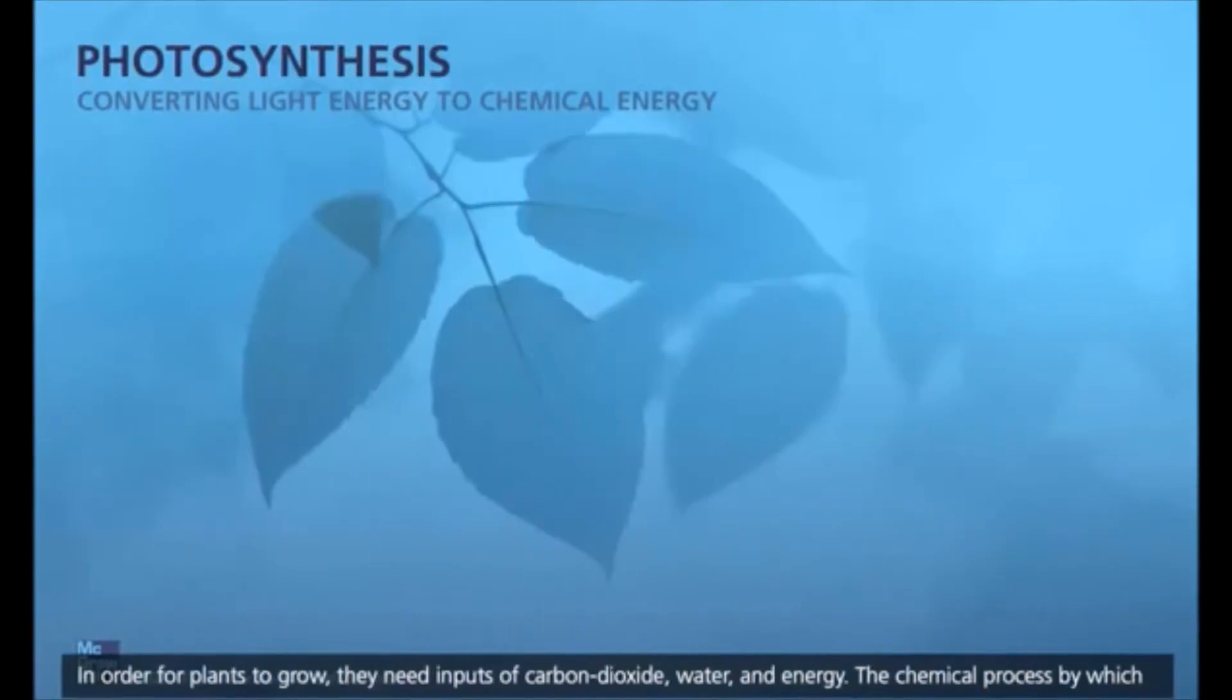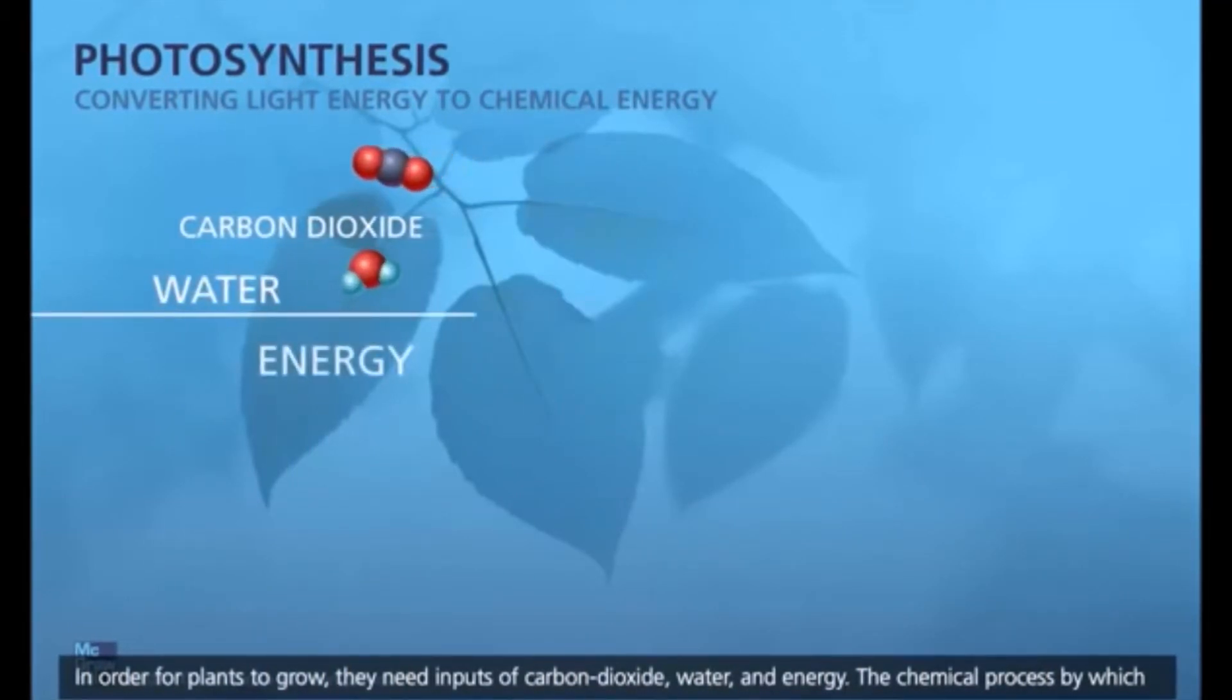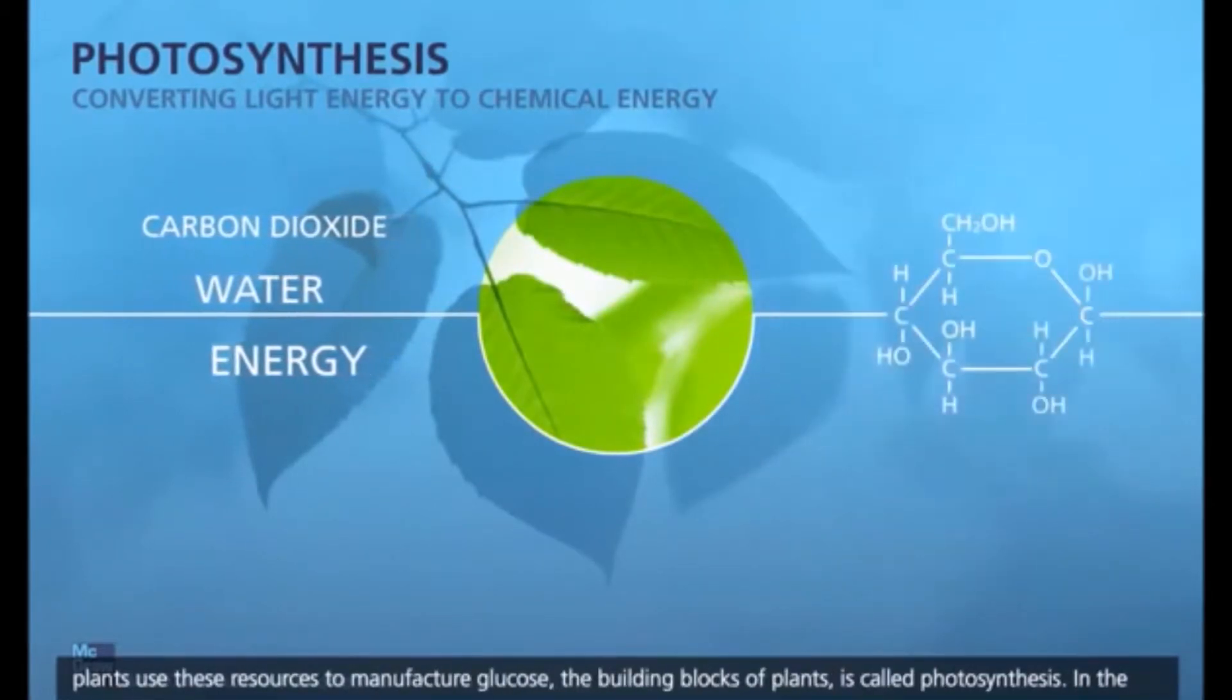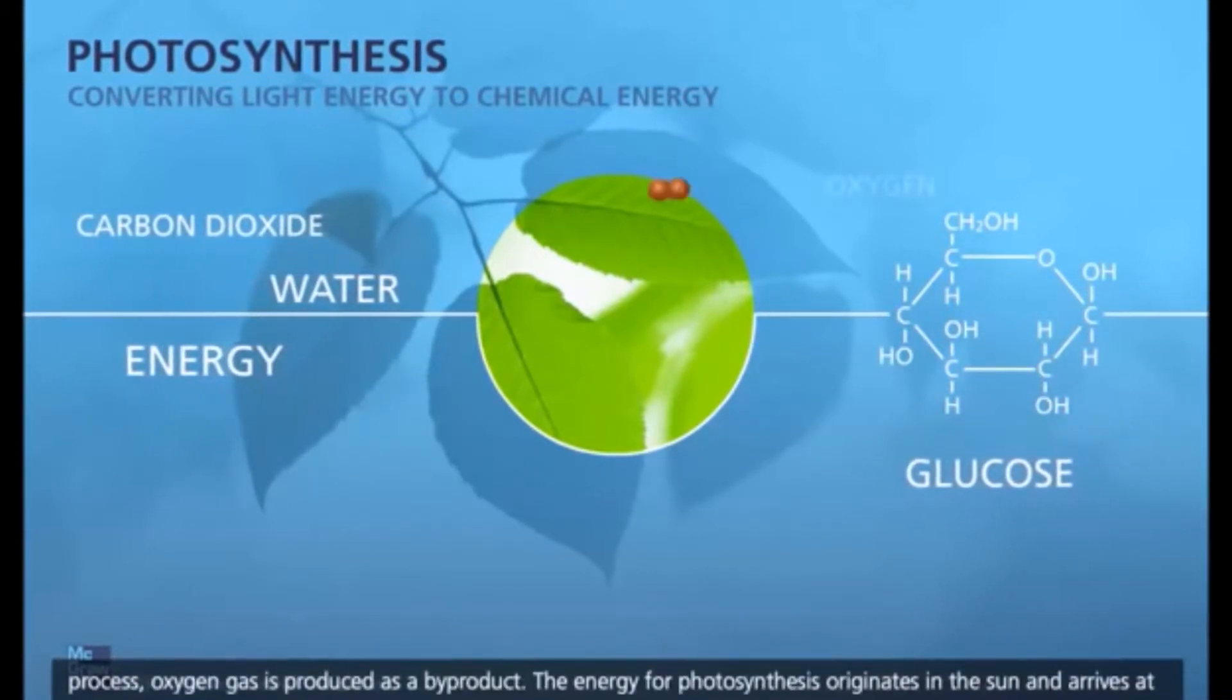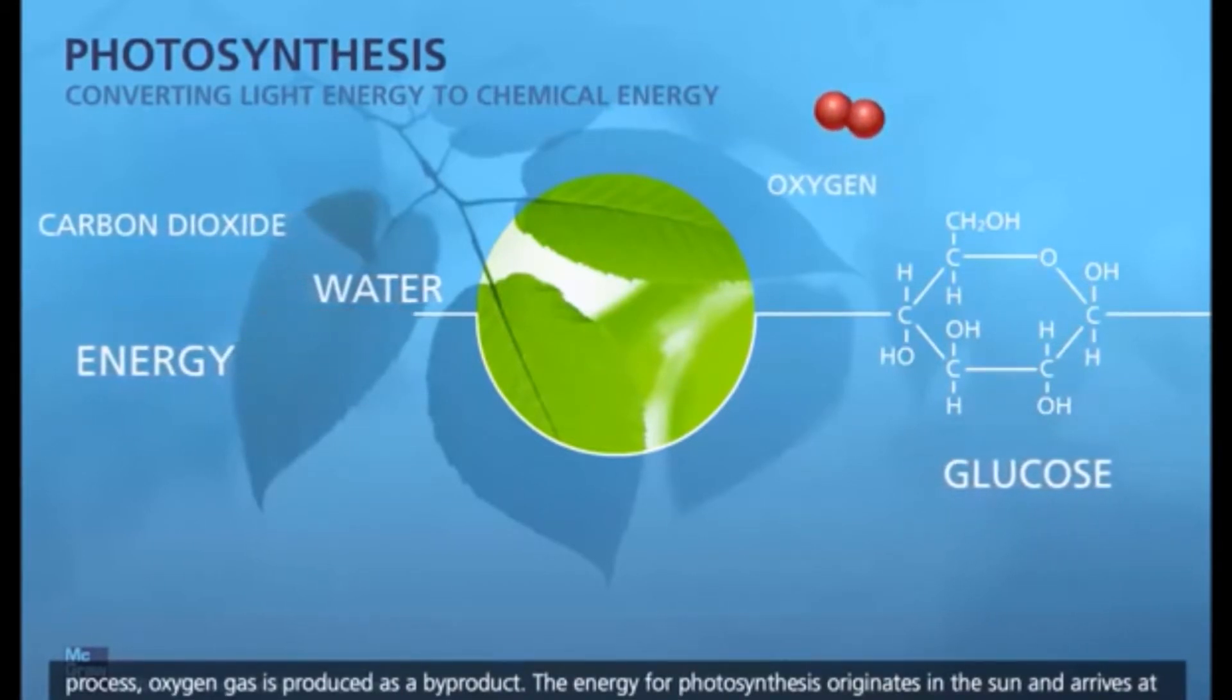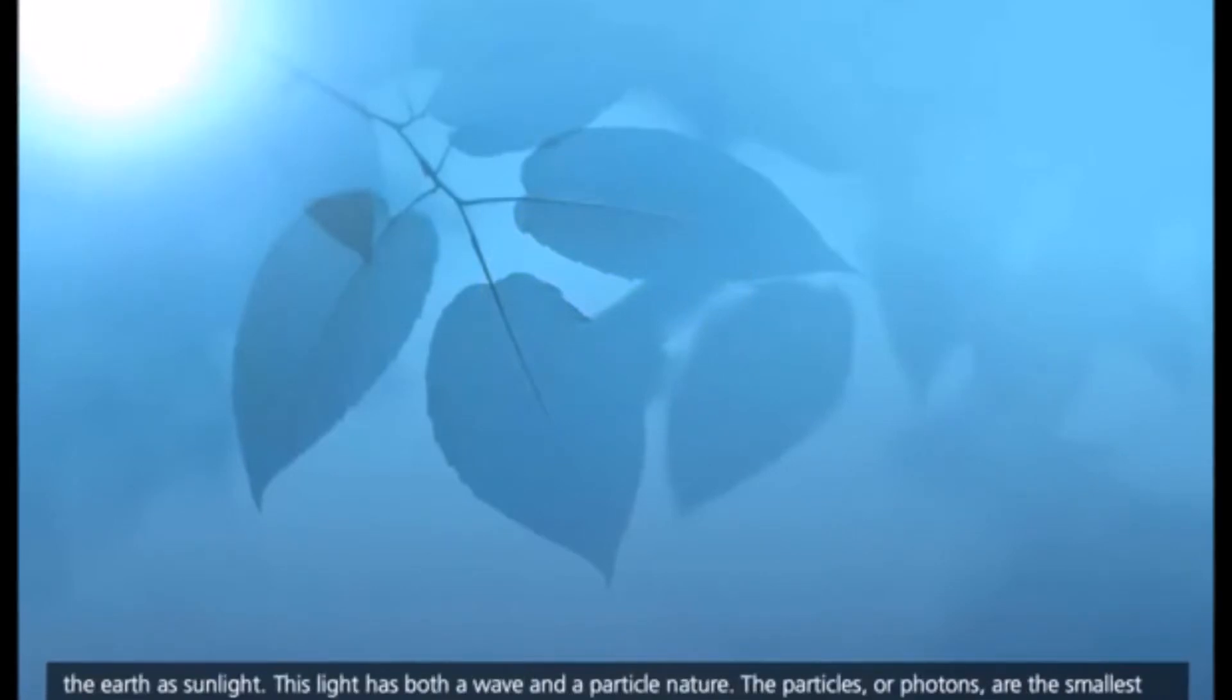In order for plants to grow, they need inputs of carbon dioxide, water, and energy. The chemical process by which plants use these resources to manufacture glucose, the building blocks of plants, is called photosynthesis. In the process, oxygen gas is produced as a byproduct. The energy for photosynthesis originates in the sun and arrives at the Earth as sunlight.